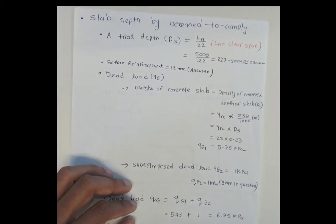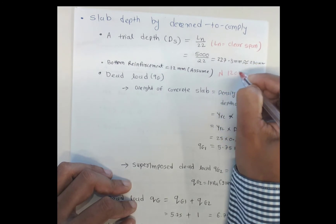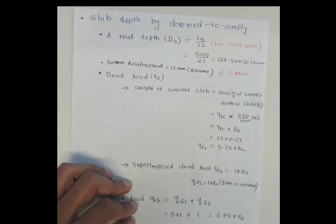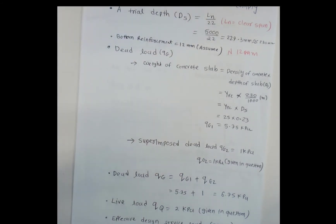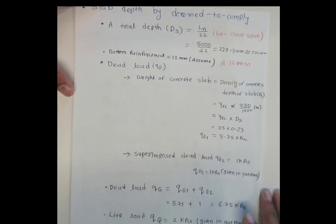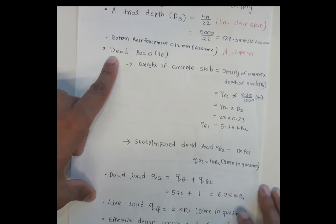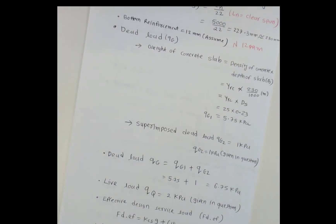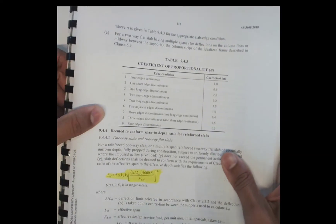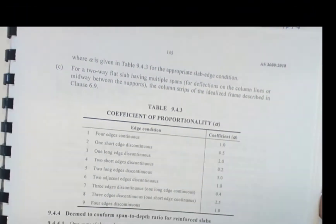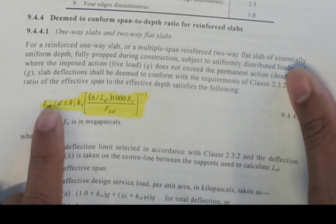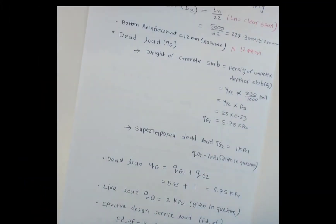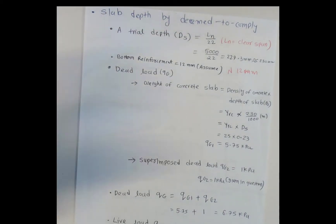The second assumption is that the bottom reinforcement — which is the tension reinforcement — is 12 millimeter diameter bars. These are the two main assumptions we make at the start of the calculation, and we will check them against the deflection check requirements from the standard. The equations we will use are given in AS 3600-2018, page 145, Clause 9.4.4.1, which gives the L/d equation and all the factors we need to find one by one.